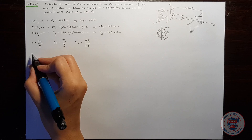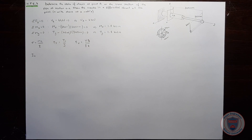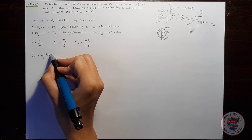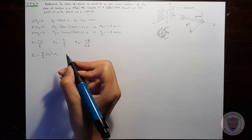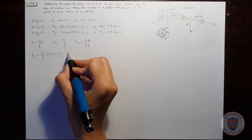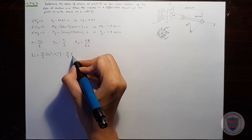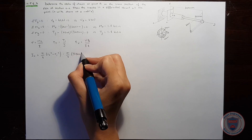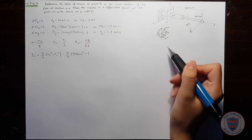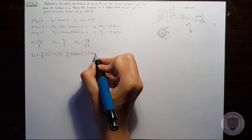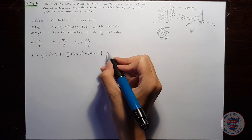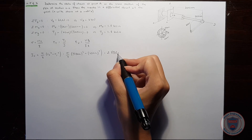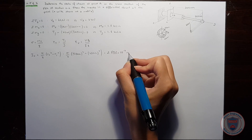Let's calculate the moment of inertia with respect to x. It will be equal to pi over 4 times the outer radius to the power of 4 minus the inner radius to the power of 4. Substituting the values — outer radius 50 millimeters and inner radius 40 millimeters — we obtain 2.898 times 10 to the power of negative 6 meters to the power of 4.